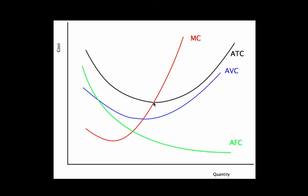Marginal cost has to hit right at the minimum of average total cost, for the same reason we saw before. What's changing with output is my variable cost, or marginal cost. If what I'm adding to cost is below my average — remembering that average total cost includes average fixed cost — I'm dragging down the average. That's true until I hit this point; then what I'm adding is above the average and I'm dragging it up. So marginal cost hits the minimum ATC right there, just like it hit minimum AVC, but at a higher quantity.